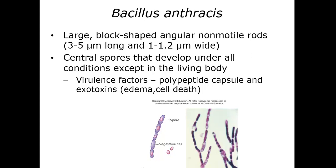Bacillus anthracis are long bacilli, non-motile rods with centrally located spores that develop under certain conditions. Their virulence factors are the capsule and exotoxins. These exotoxins lead to fluid accumulation and swelling through edema, as well as cell death. There are three different forms with different routes of transmission and different points of entry into the human body.